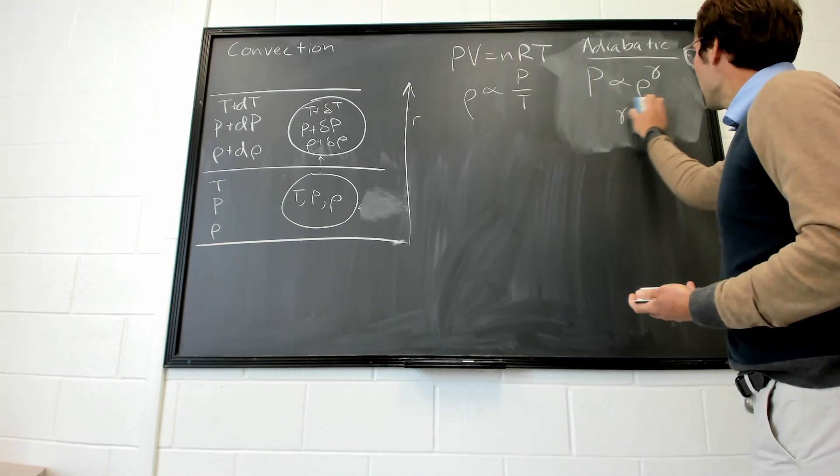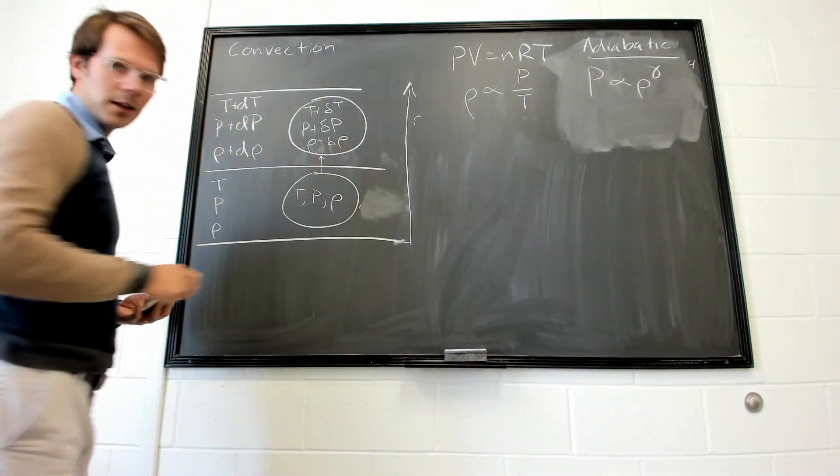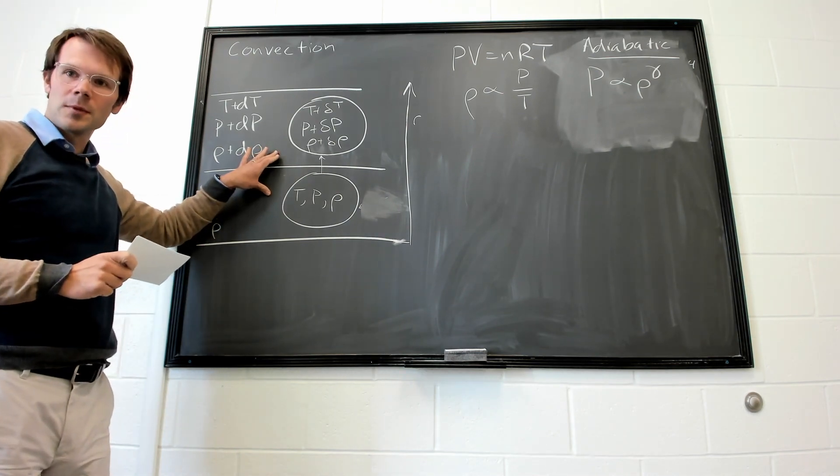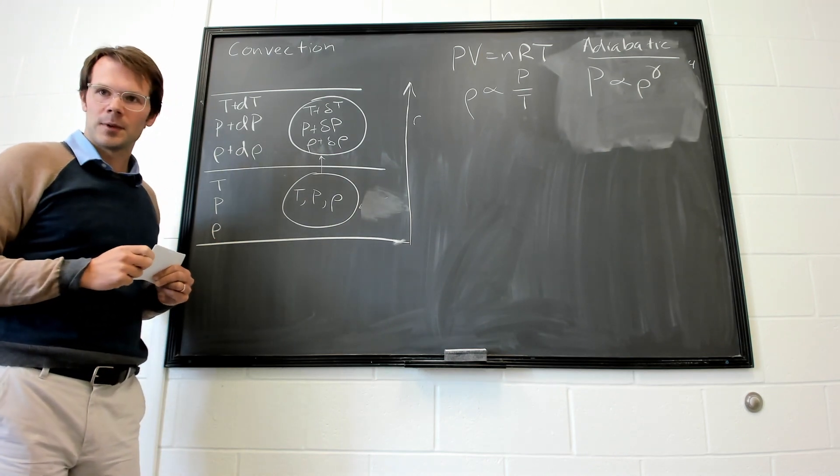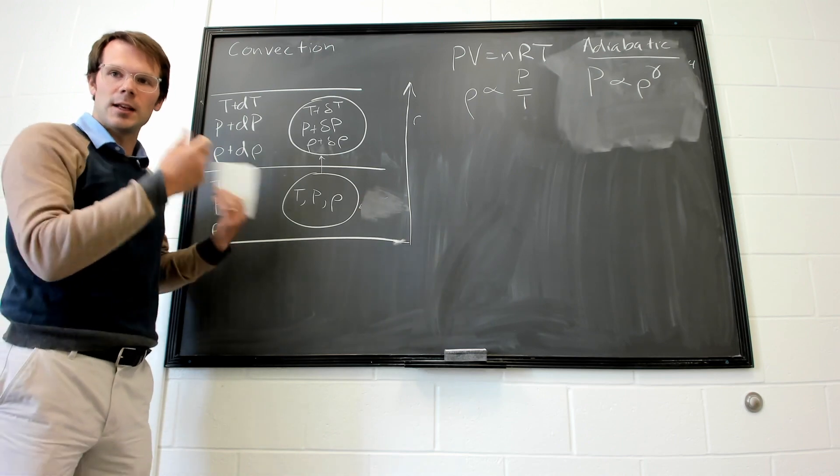Okay. So now that we have some of these formulae, let's revisit the thought question I posed. What might be a criterion for how this cell will respond? Will it go down? What will be necessary if it needs to sink?